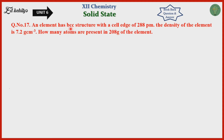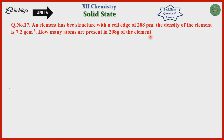An element has BCC structure with a cell edge of 288 picometer. The density of the element is 7.2 gram centimeter power minus 3. How many atoms are present in 208 gram of the element?